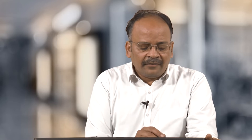For continuous operation, the biomass solids generated in the aeration tanks are separated and thickened in the secondary clarifier via gravity settling. A portion of the settled solids — called secondary or activated sludge — is recycled and returned to the aeration tank, and the excess sludge is withdrawn from the clarifier underflow for additional handling or disposal. The clarified liquid, which is the treated final effluent, is further disposed of into a stream or taken for further treatment depending on requirements.